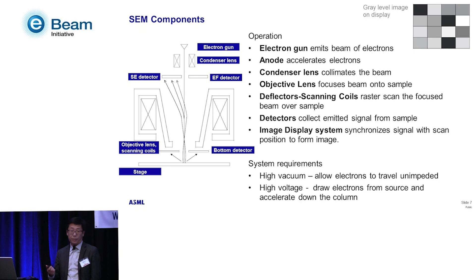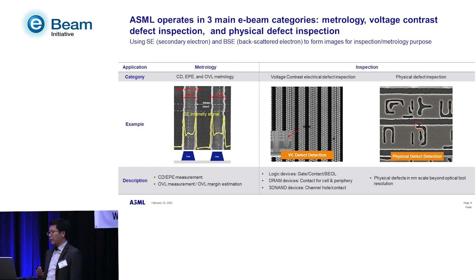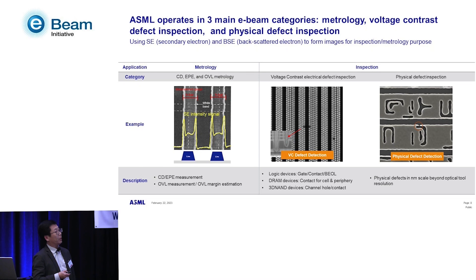ASML operates in three major e-beam application categories: metrology and inspection, where inspection covers two areas — voltage contrast and physical inspection. Metrology on the surface addresses CD or EPE, and with high landing energy we can see through multiple layers for overlay applications.